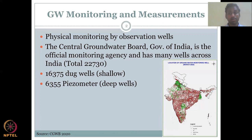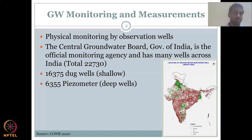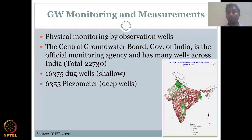The dug wells are mostly shallow — approximately 30 meters — and you normally measure with a tape or an automatic measuring device. For piezometers, which are tubes going more than 30 meters deep, you need automatic monitoring devices. In some regions like Chennai, groundwater has fallen to 250–300 meters, so you cannot use a tape — you need an automatic monitoring device, and that setup is called a piezometer.